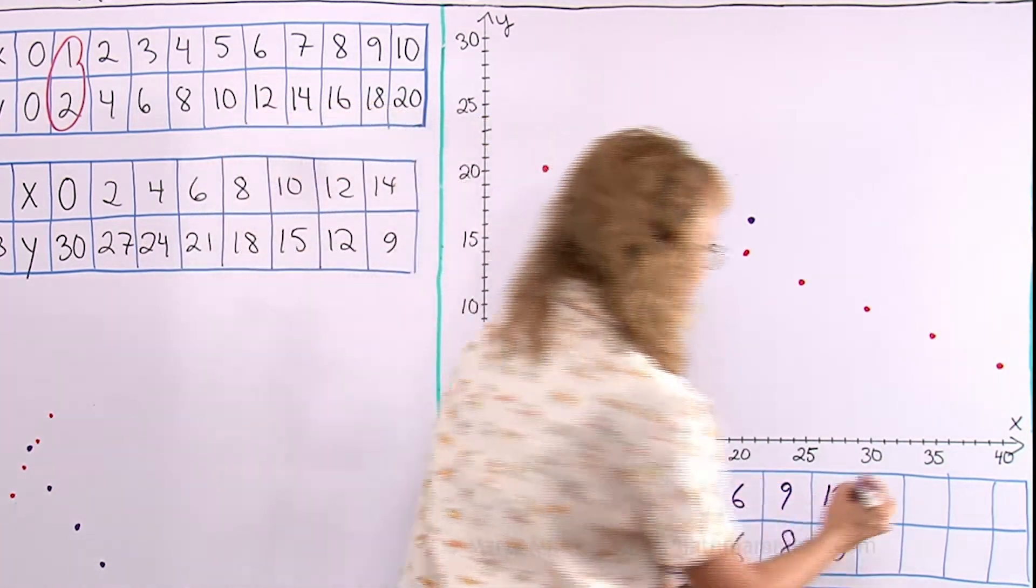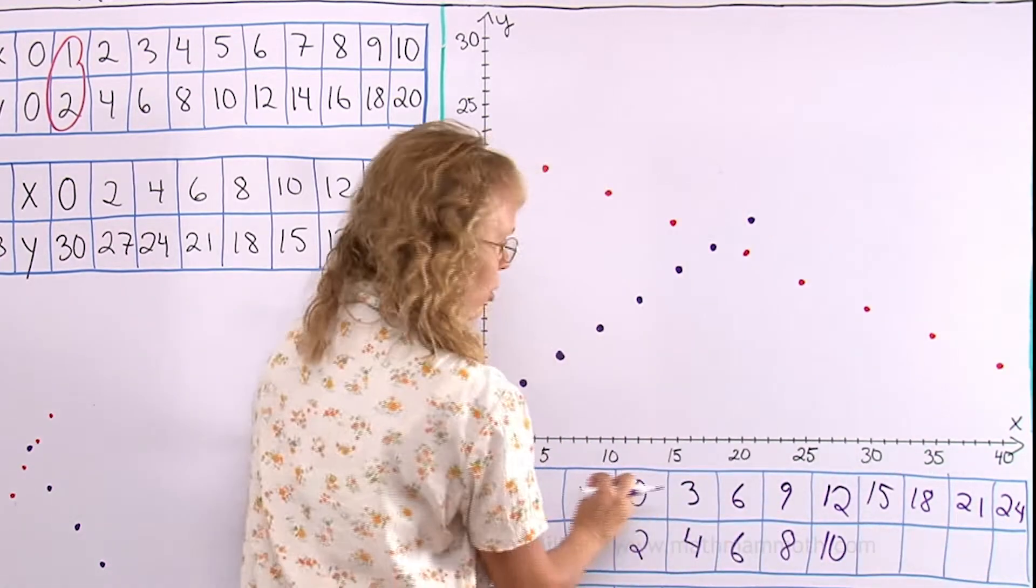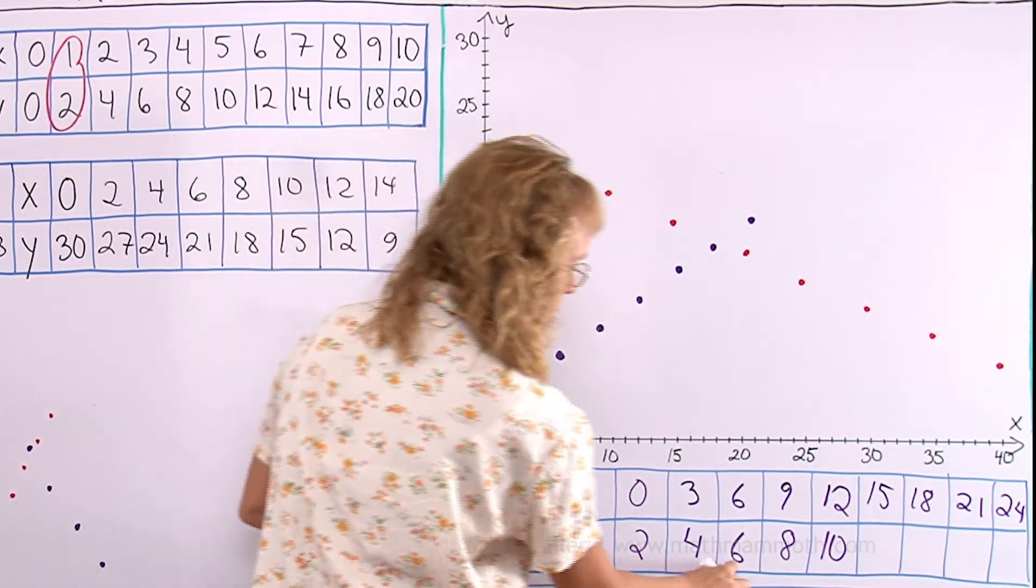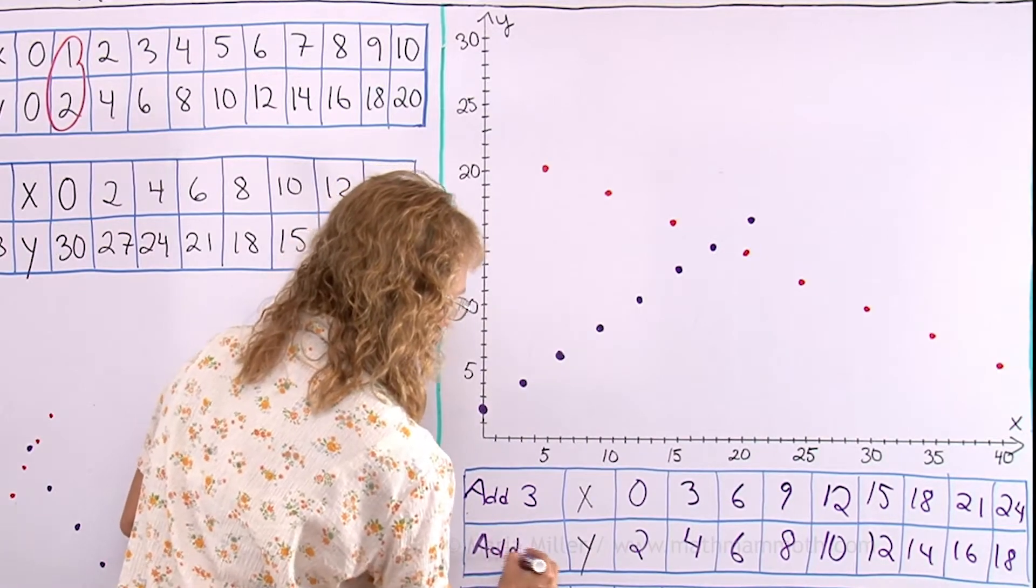Do you see the pattern? 0, 3, 6, 9, 12. I'll just fill it in. This one goes by 3, so we are adding 3 each time. This one goes by 2s. We are adding 2 each time.